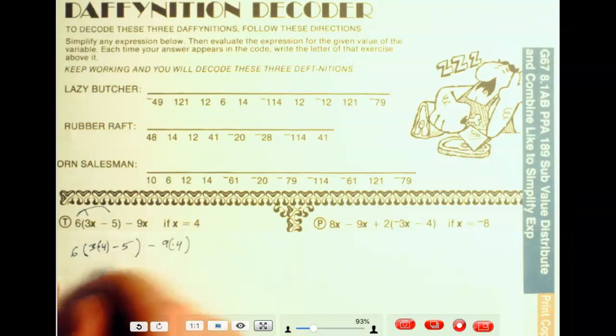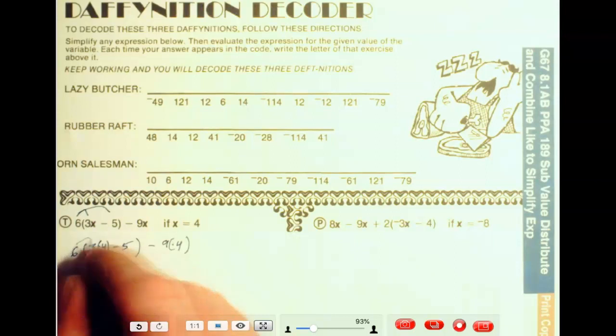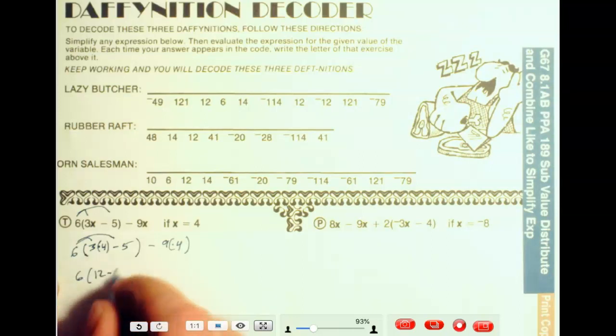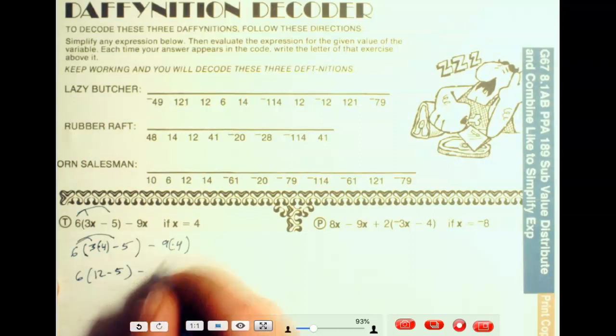So, with the distributive property, you can do this both ways. I think I'll even do that. I'm going to do 3 times 4 is 12, so that's 6 times 12 minus 5, minus, this would be 36.